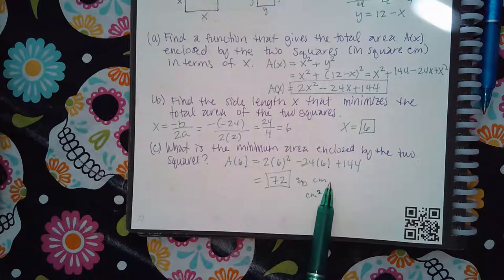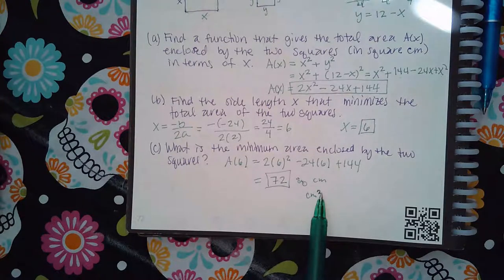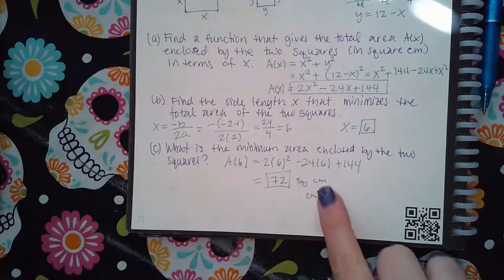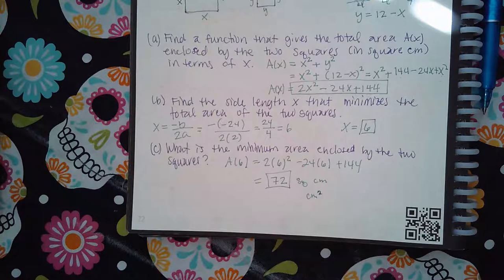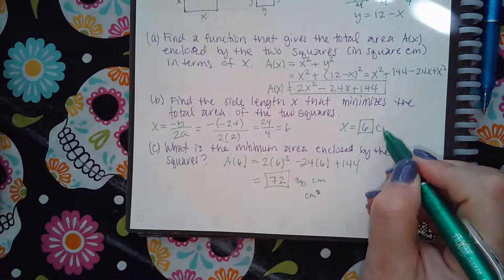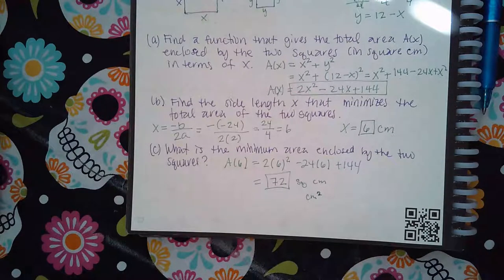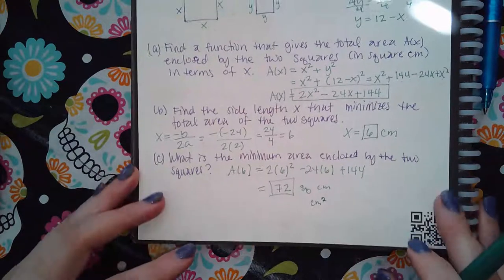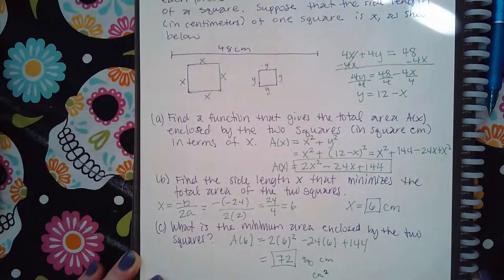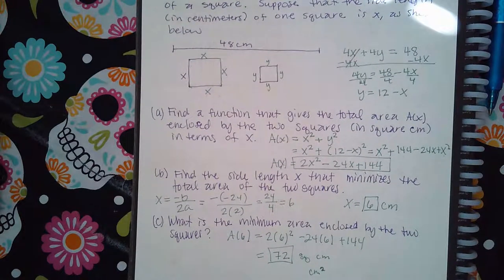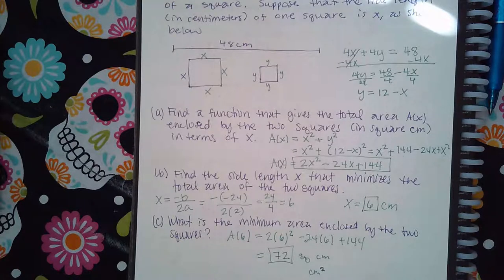Whether you write 'square centimeters' or 'centimeters squared' means the same thing — when selecting from a drop-down, choose centimeters squared for area. Side length answers are just regular centimeters. Those are all three cases: the full rectangle, the three-sided rectangle, and the wire cut into two squares.